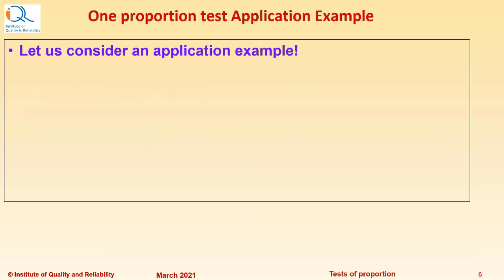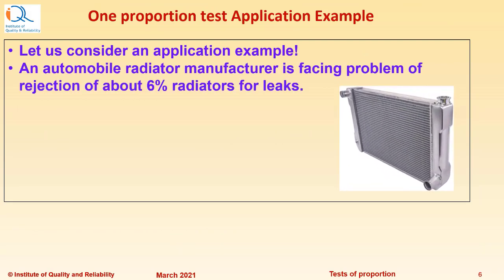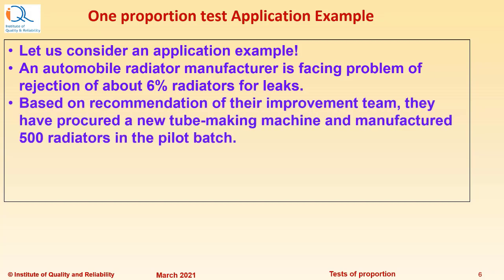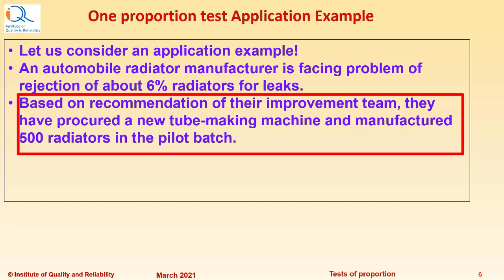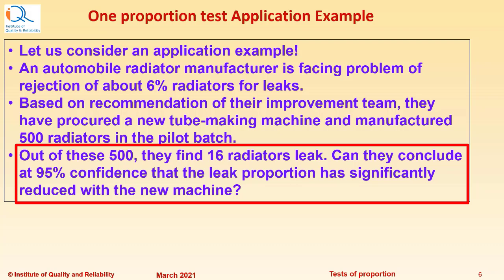Let us consider an application example of one proportion test. An automobile radiator manufacturer is facing problem of rejection of about 6% radiators for leakage problem. Based on recommendation of their improvement team, they have procured a new tube making machine and manufactured 500 radiators in the pilot batch. Out of these 500, they find 16 radiators leaking. Can they conclude at 95% confidence that the leak problem has significantly reduced with the new machine?